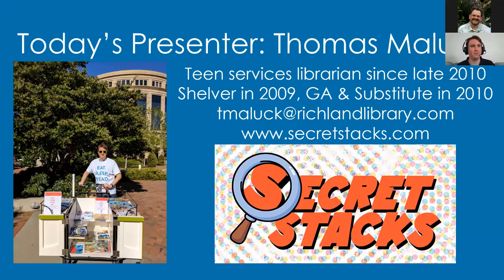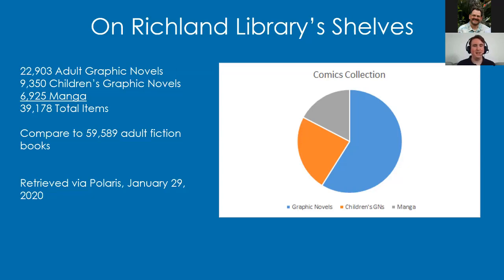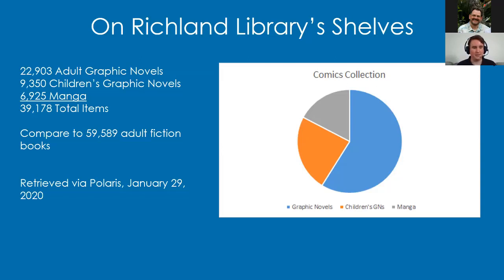I love helping people find the right books — anything I can do to ripple-effect book recommendations. I also co-host a podcast with librarian Kristen Lalonde about comics and libraries called Secret Stacks. At Richland Library, our general graphic novel collection has about 22,900 titles, our children's graphic novel collection has 9,300 titles, and our manga collection has 6,925 — a nice big chunk. Our adult fiction collection is roughly 60,000 titles.